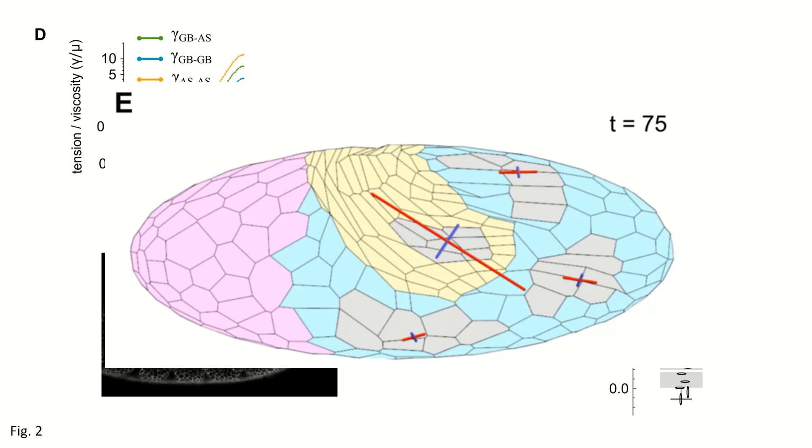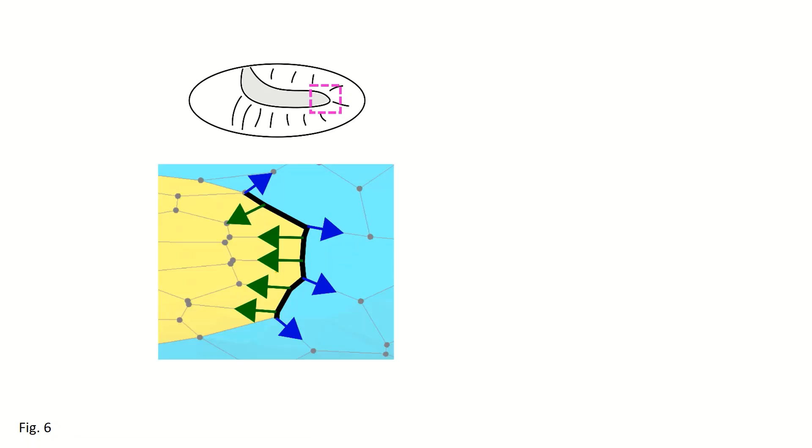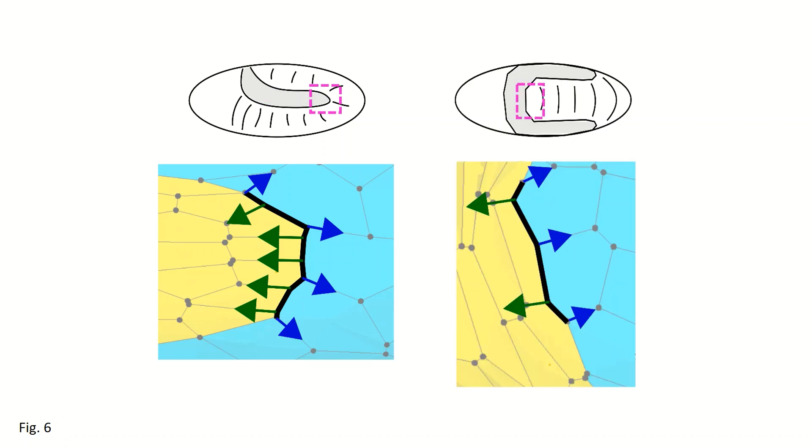You can see this by looking at the density of cell edges around the germband-amnioserosa boundary. Where the two tissues meet on the embryo side, amnioserosa cell junctions are more densely packed, yielding a net pull towards the head. On the embryo's back, the opposite occurs, and denser germband cell junctions pull towards the tail.